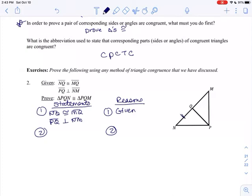I find statement-reason proofs the easiest type of proof there are. So I have all my given as step one. Let's mark our diagram. NQ. Where's NQ? NQ is congruent to MQ. Great.